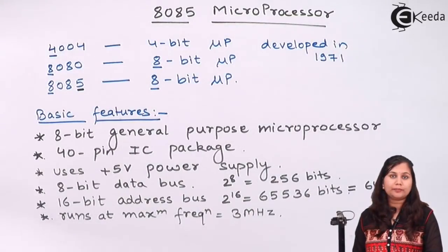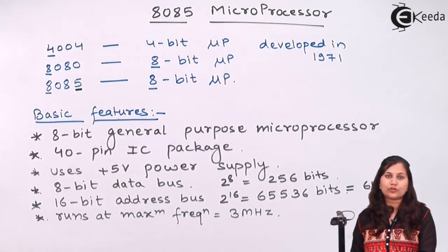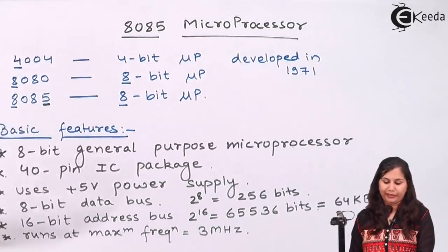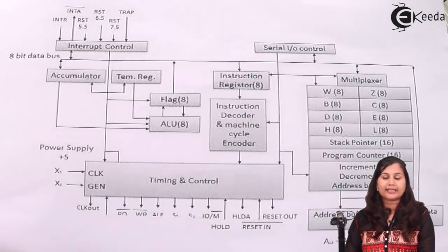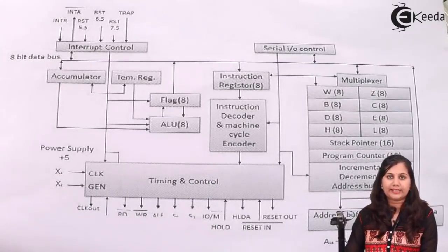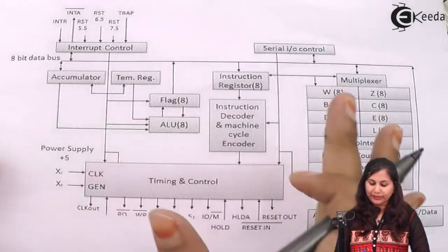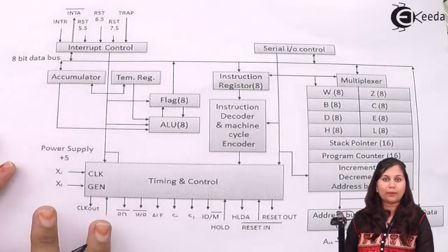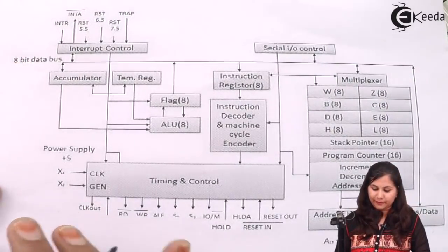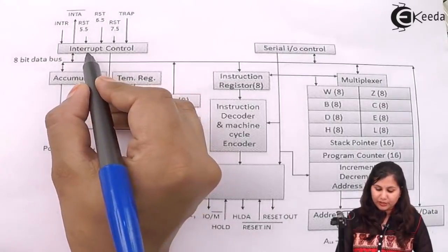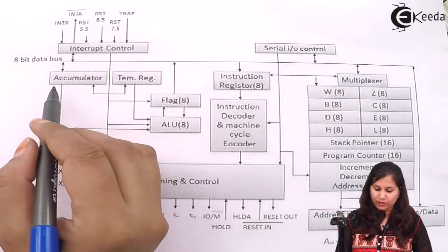Let us now come to the block diagram, or the architecture of the 8085. This is the block diagram showing the various components or the various blocks of the microprocessor.